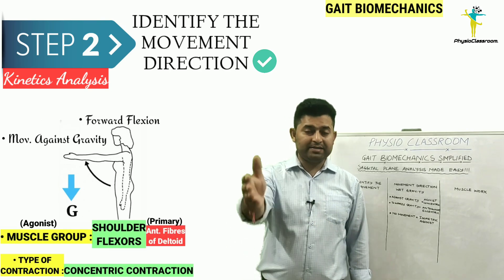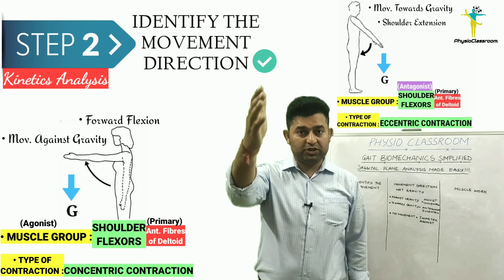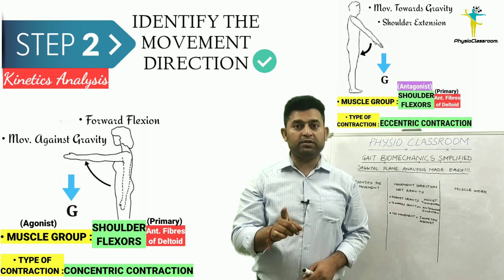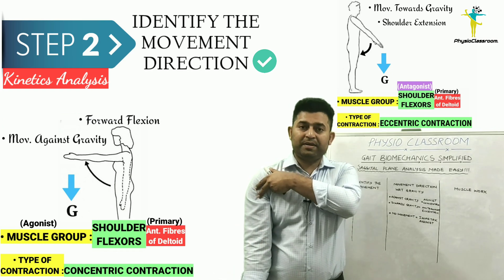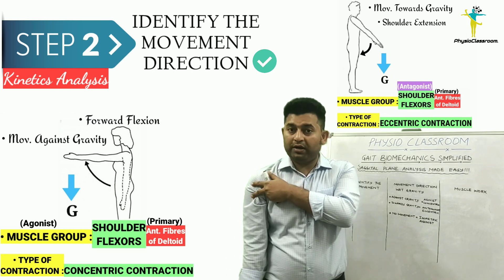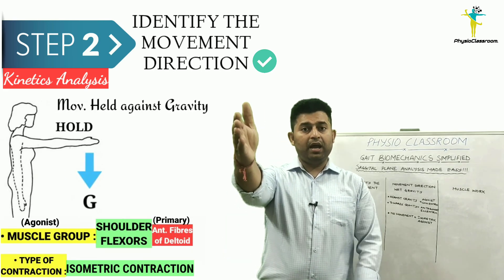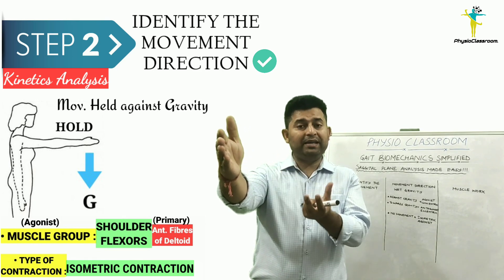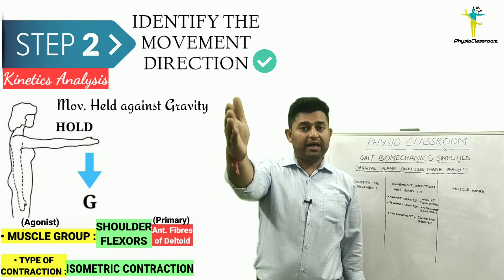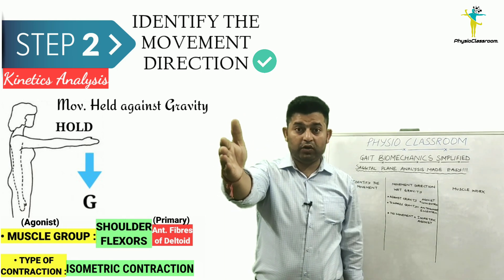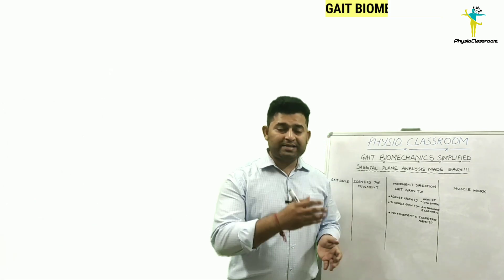To summarize: whenever movement takes place against gravity, it needs to be produced by concentric contraction of the agonist; whenever movement takes place towards gravity, it needs to be controlled by eccentric contraction of the antagonist. In this shoulder extension example, the antagonist flexors control the motion eccentrically. In the third situation, whenever a joint is held stationary against gravity, it is produced by isometric contraction of the agonist — for example, holding the shoulder at 90 degrees flexion requires isometric work from the anterior deltoid.